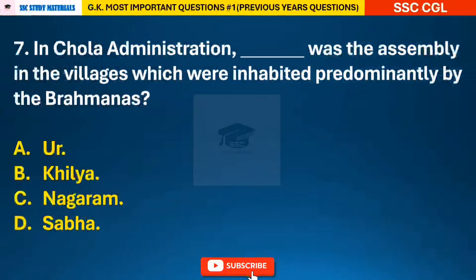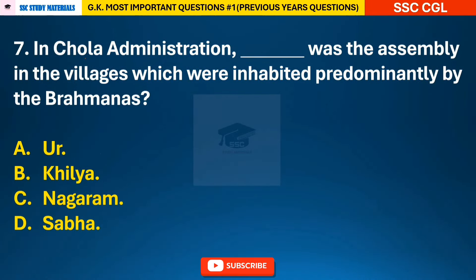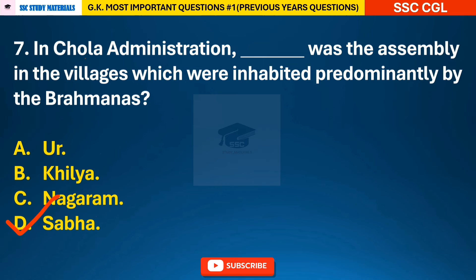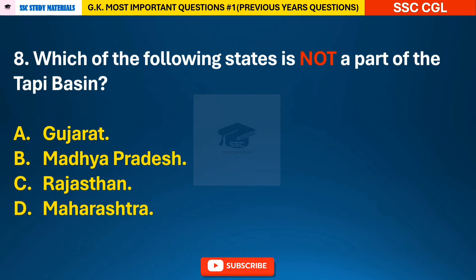Question 7: In Chola administration, which was the assembly in the villages inhabited predominantly by Brahmanas? — answer D: Sabha. Question 8: Which of the following states is not a part of the Tapti Basin?